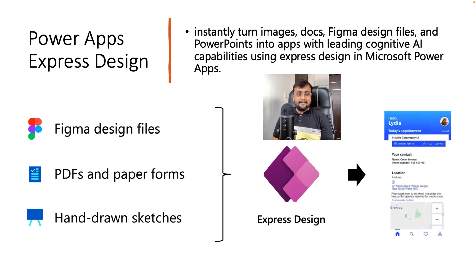With the help of Express Design, we can upload handwritten sketches, PDF or paper forms, as well as Figma design files into Express Design, and that will automatically create an app for us. Behind the scenes, it uses cognitive AI capability to design our Power Apps. This is the cool feature I love the most in this Build announcement.